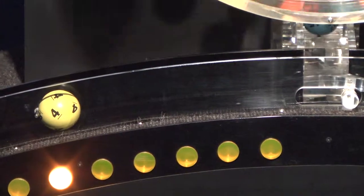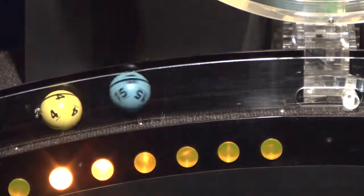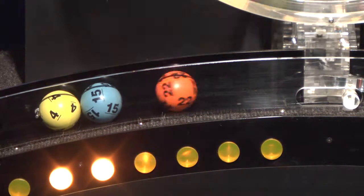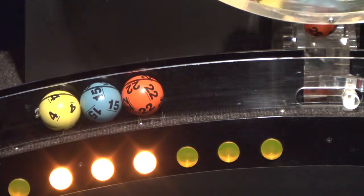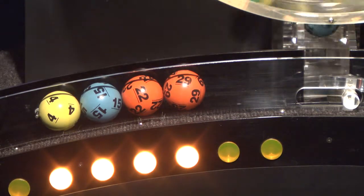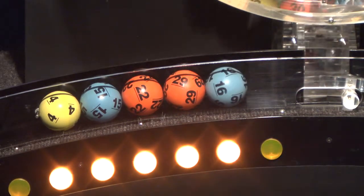Our first number is 4. Rolling right behind that is 15. That's followed by 22. If you've matched these three numbers you've already won a prize. Here comes 29. And finally 16.